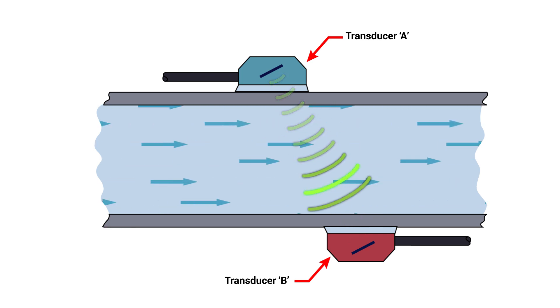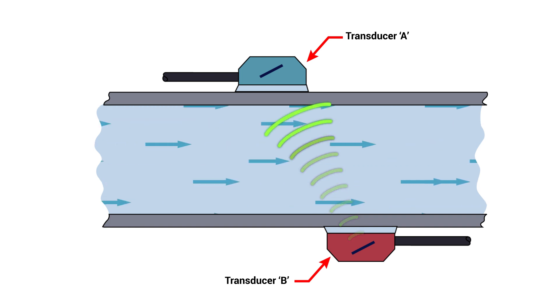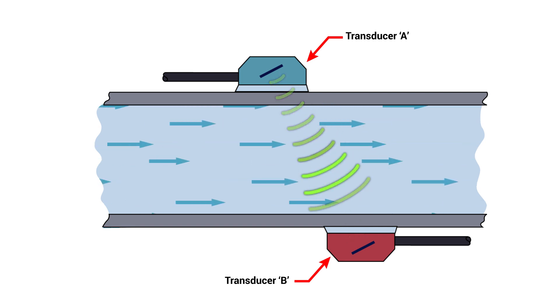If there's no flow, the travel time will be the same in both directions. Since the ultrasonic signal must traverse the pipe to be received by the sensor, the liquid cannot be comprised of a significant amount of solids or bubbles, or the high frequency sound will be too weak to travel across the pipe.